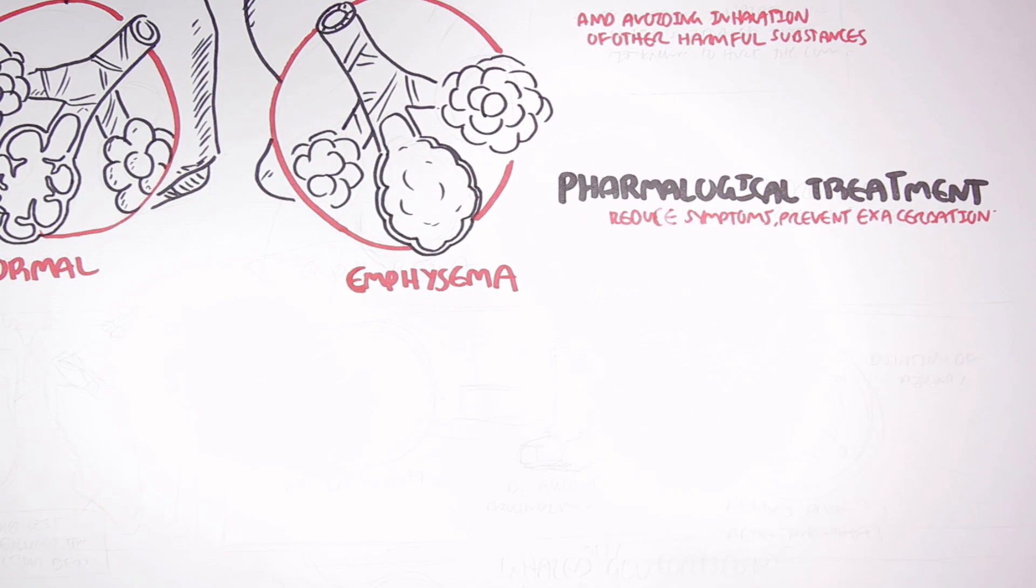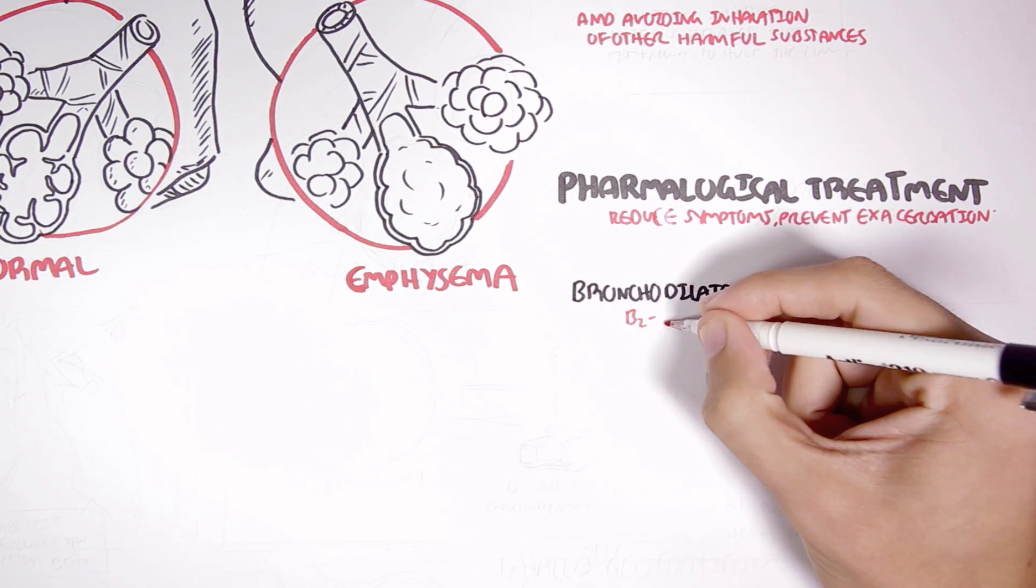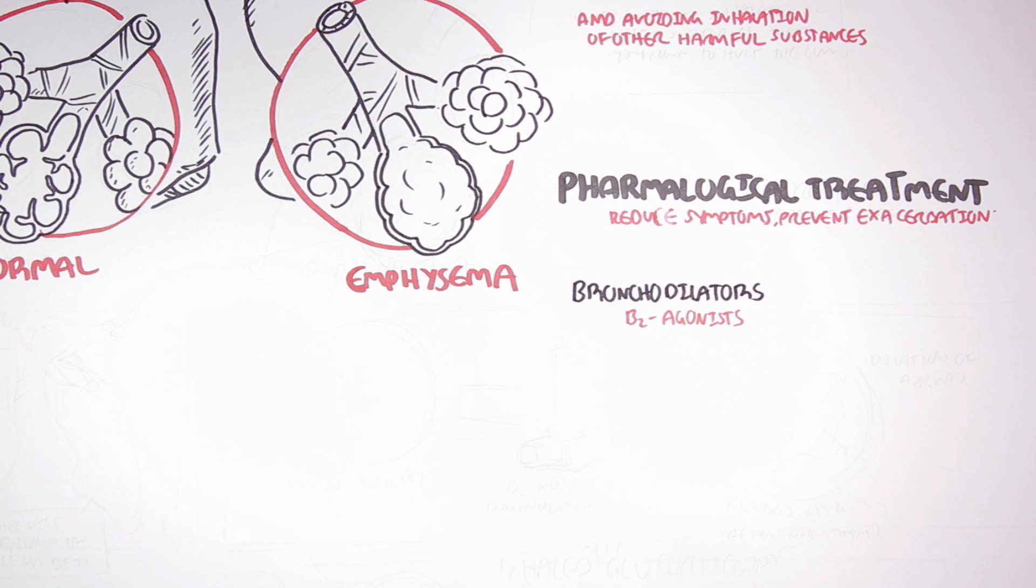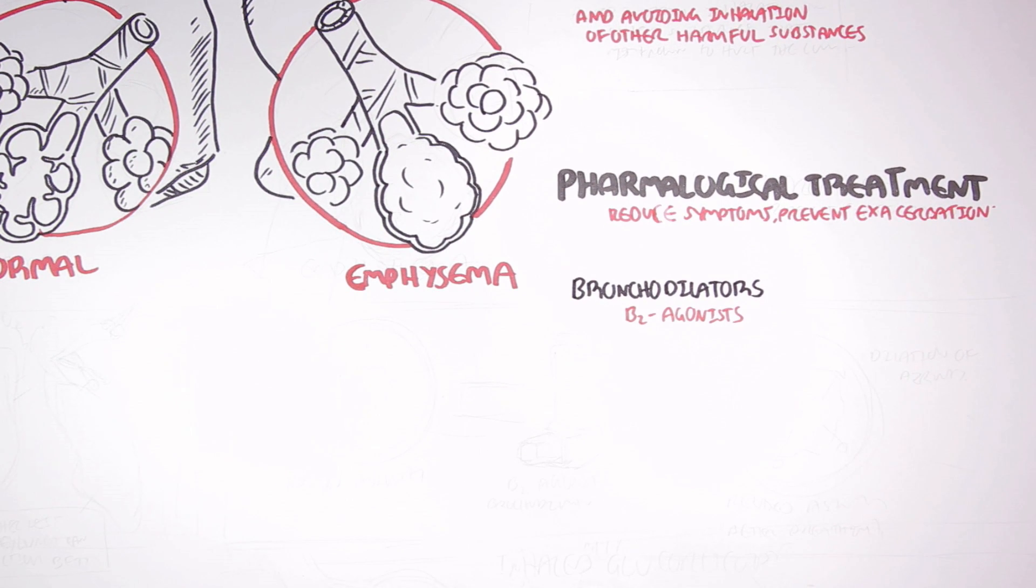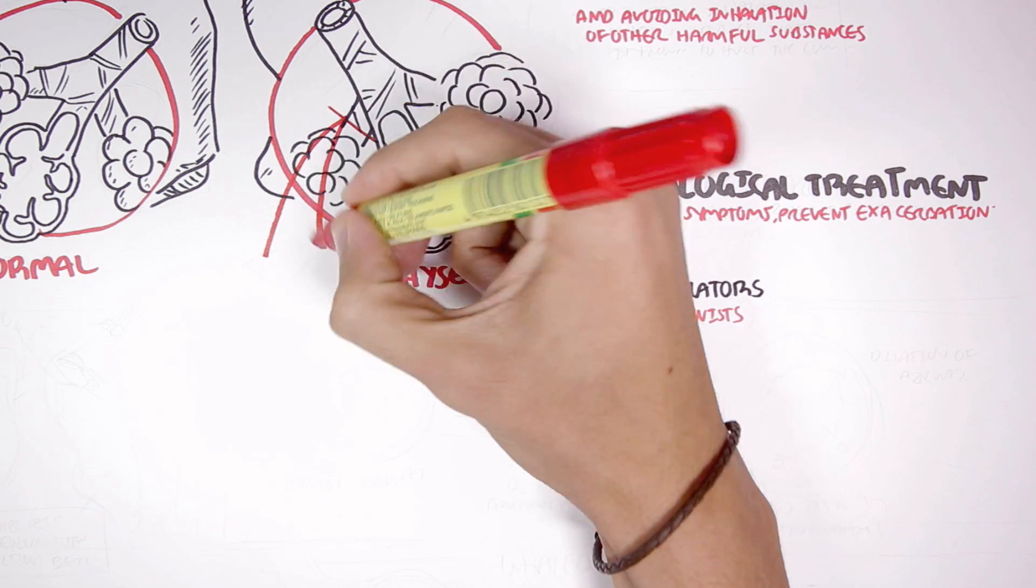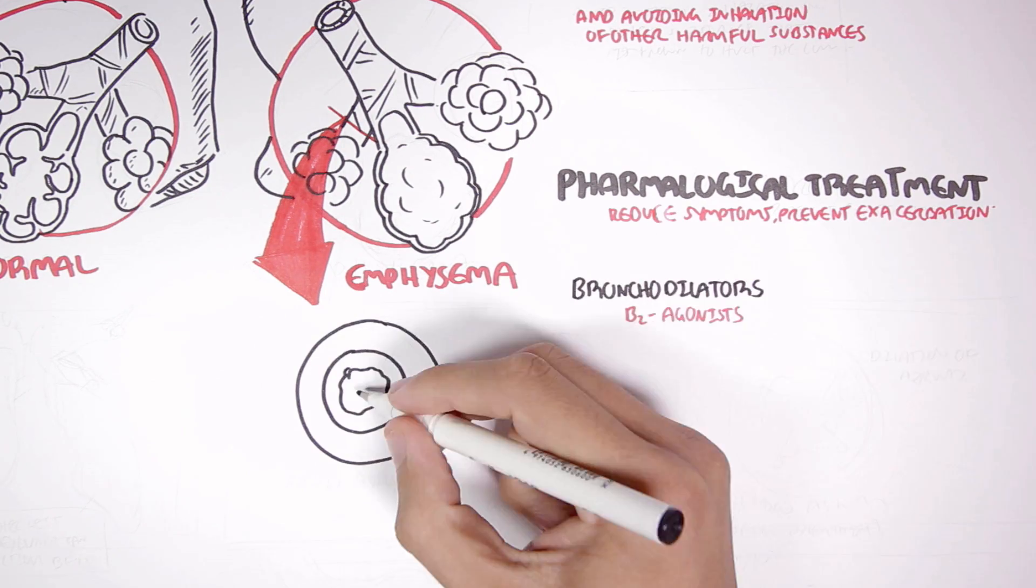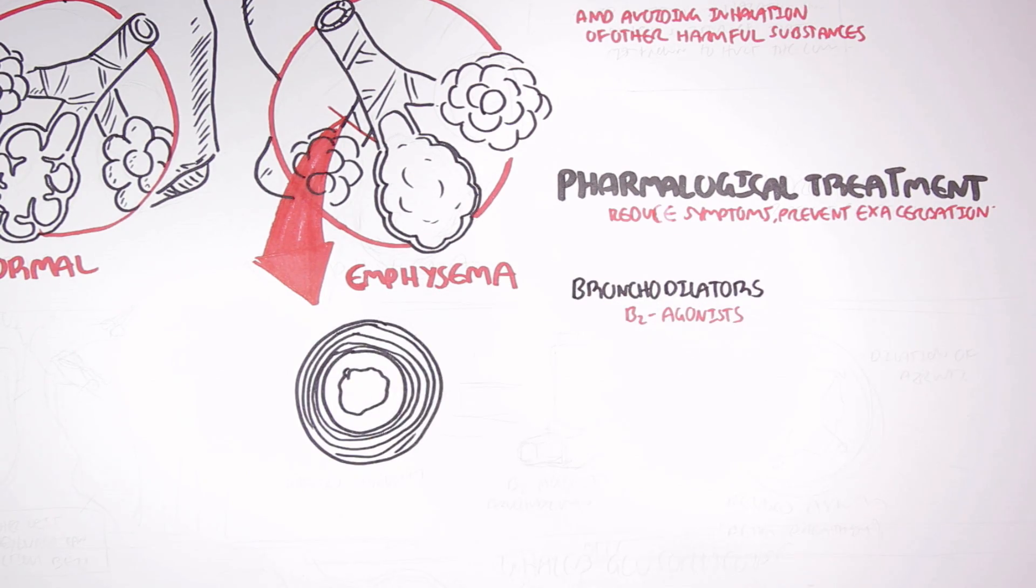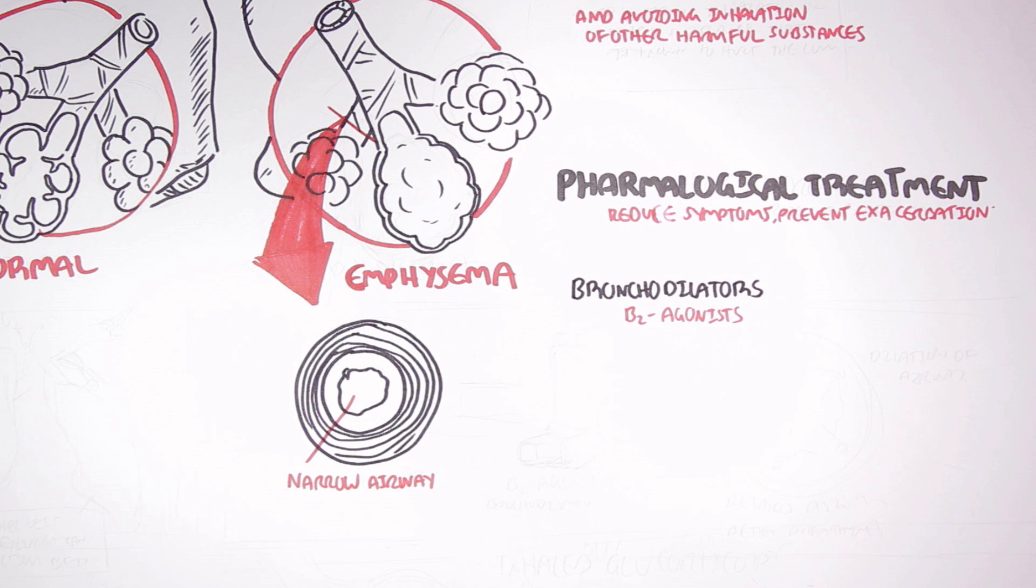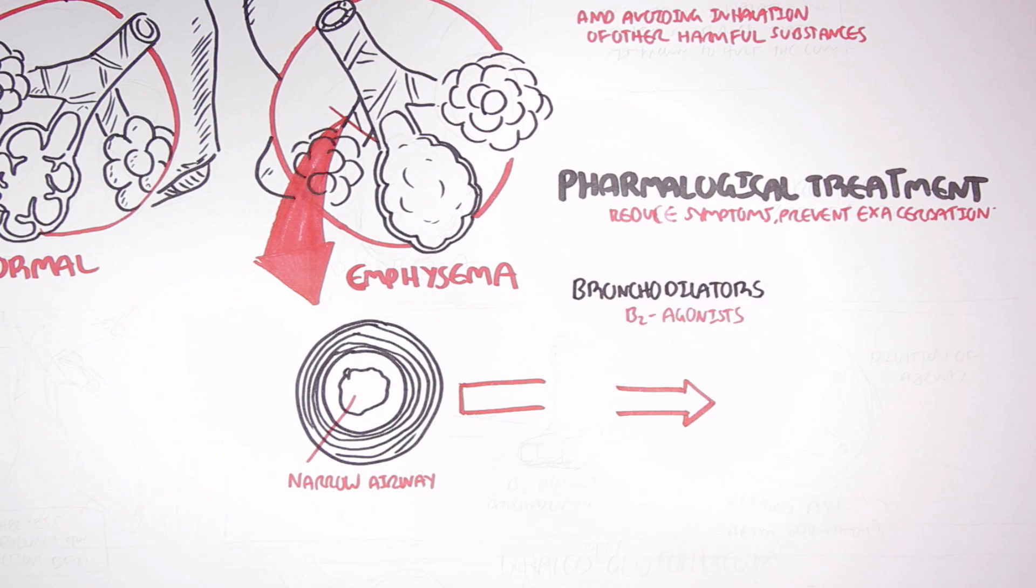One of the main drugs used are bronchodilators, the beta-2 agonists. These medications widen the airways, allowing the person to breathe better and easier. For example, if we take a cross section of the bronchial of an individual with emphysema, the airways are narrow because the smooth muscles are contracting and there may also be a lot of mucus being produced.